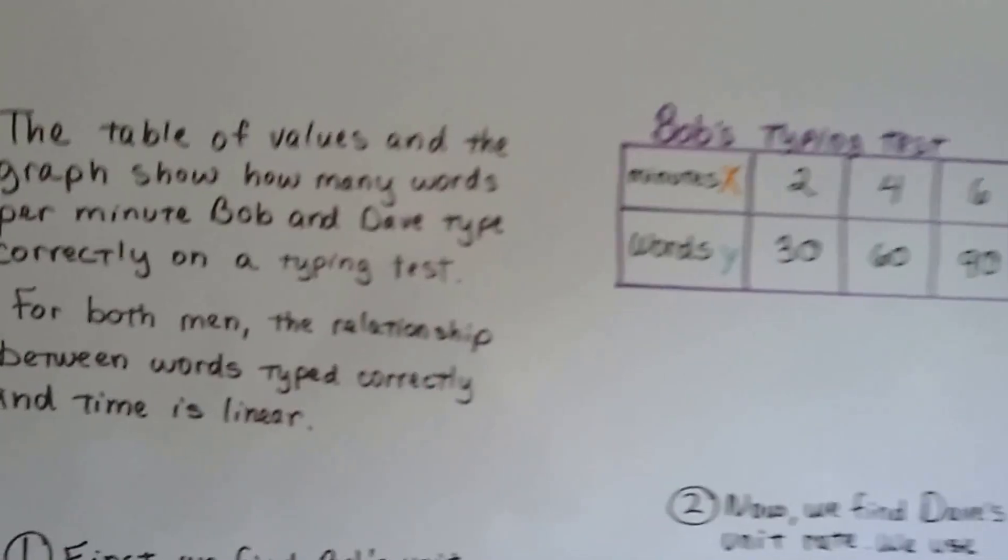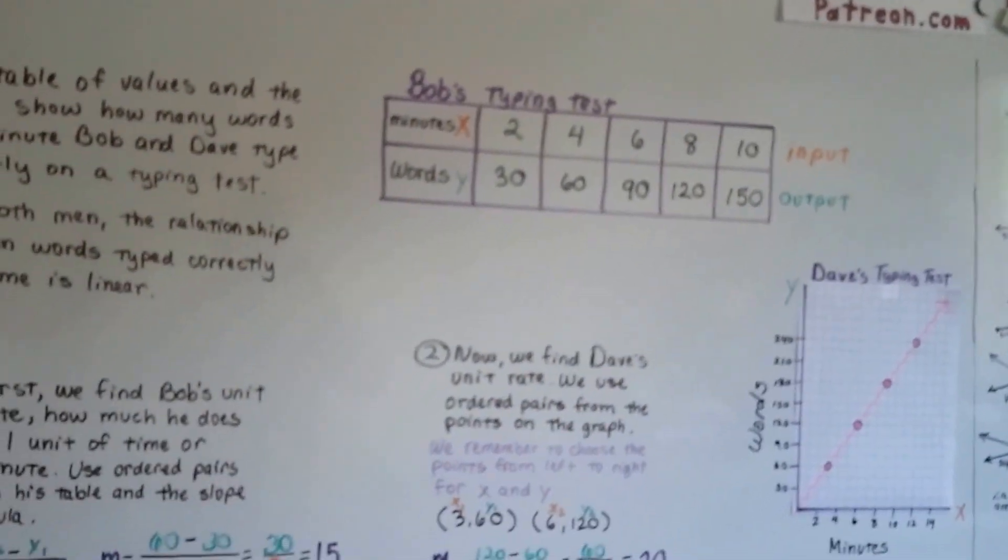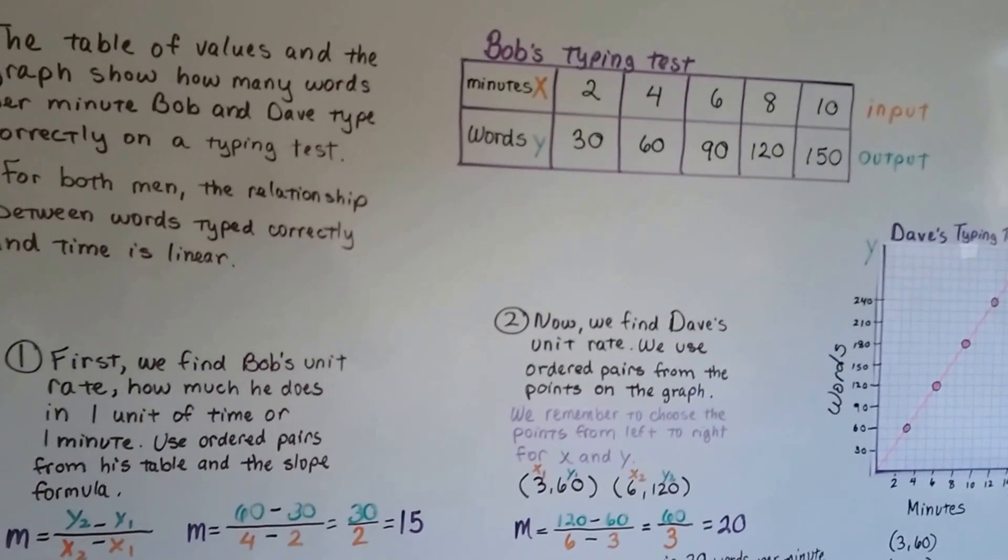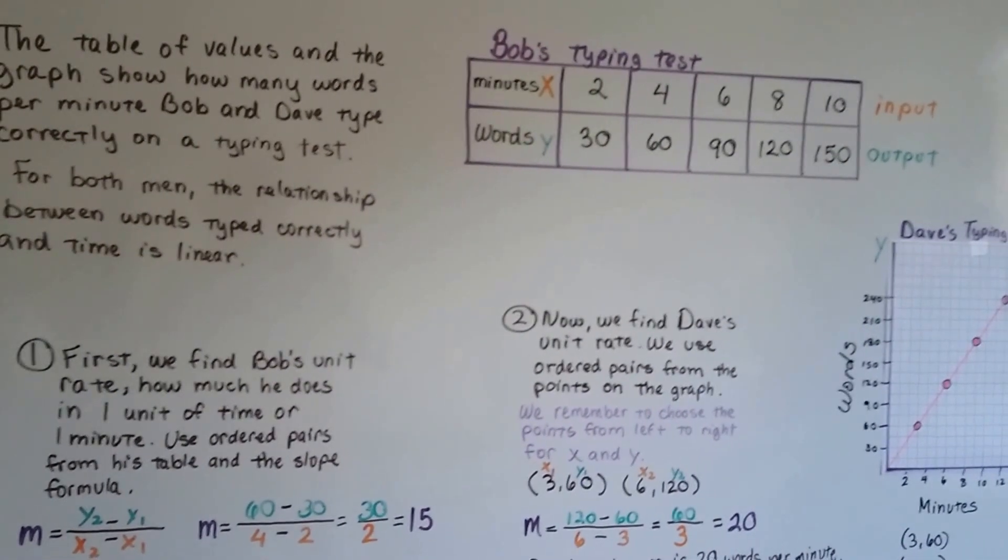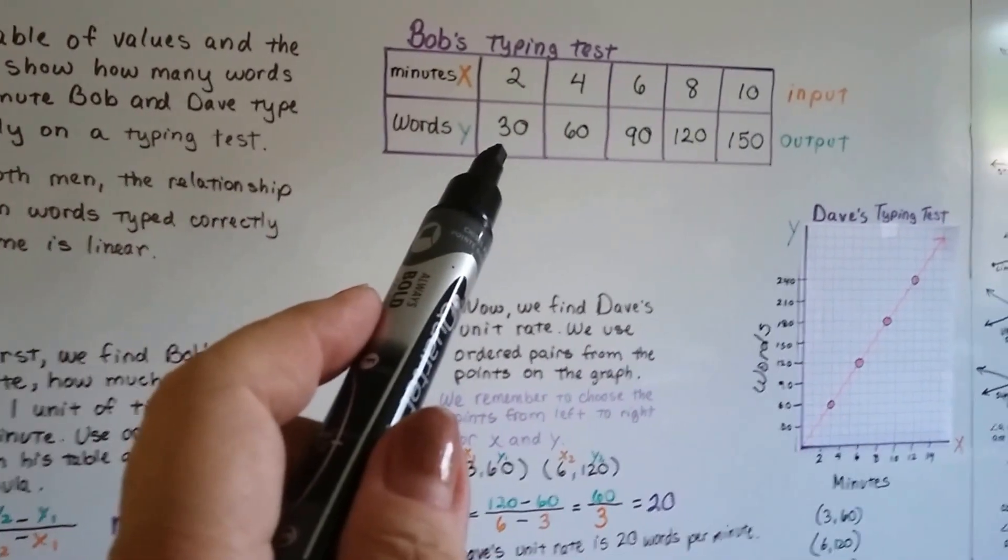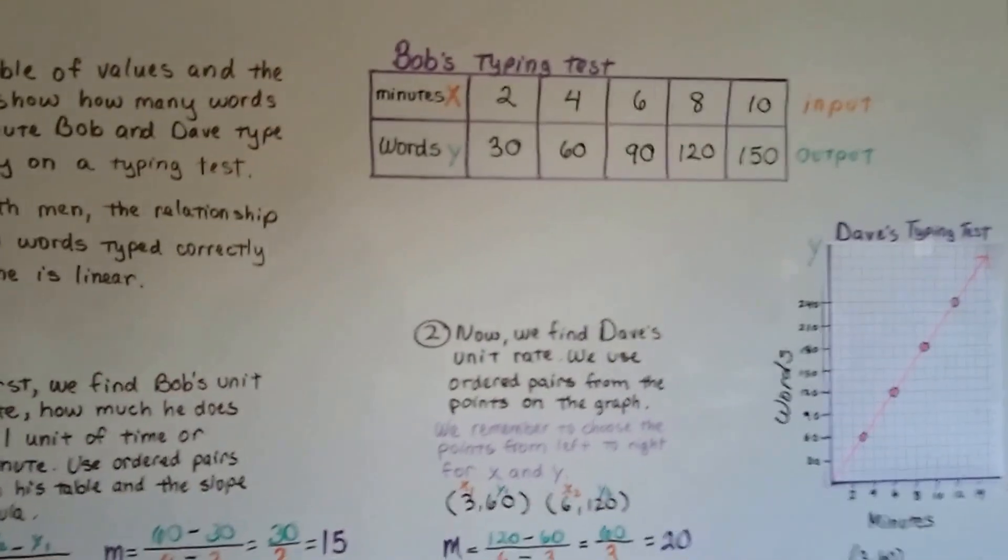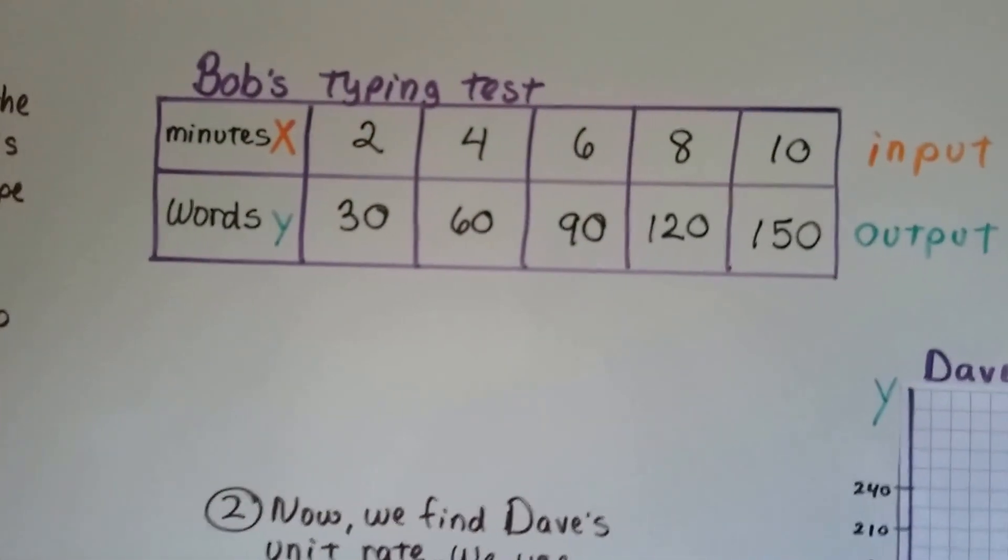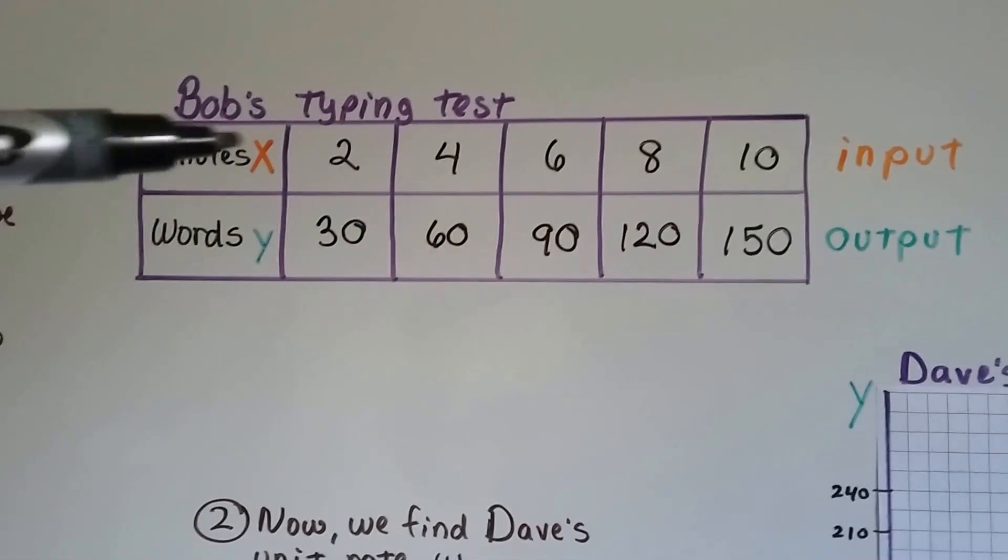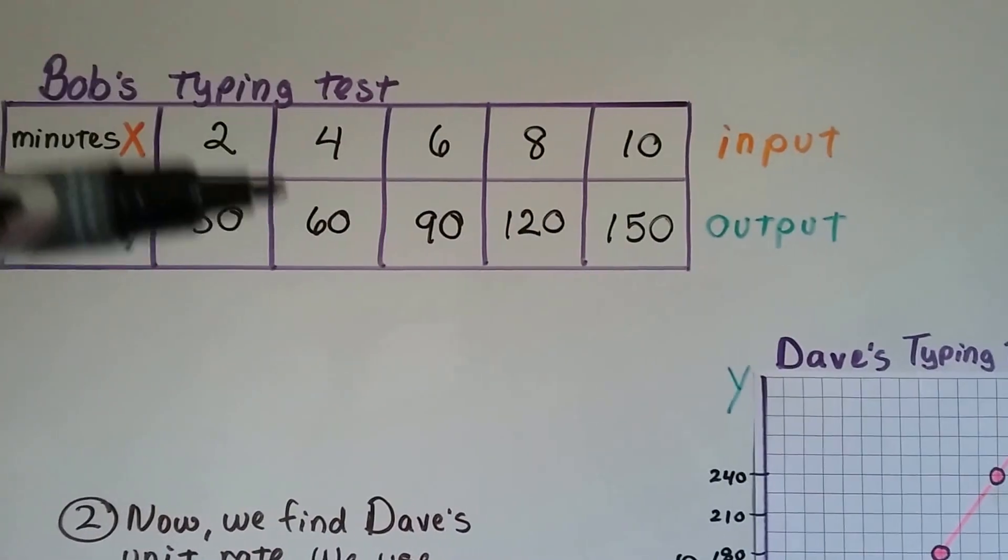The table of values and the graph show how many words per minute Bob and Dave typed correctly on a typing test. For both men, the relationship between words typed correctly and time is linear. So here's Bob's typing test in a table and Dave's typing test on a graph. We can take a look at Bob's typing test. Here is the minutes, that's x, and the words that he typed correctly is y. That's his input and his output.